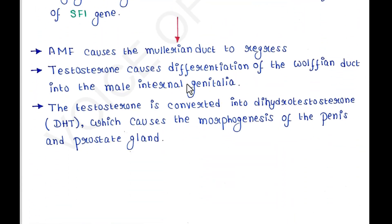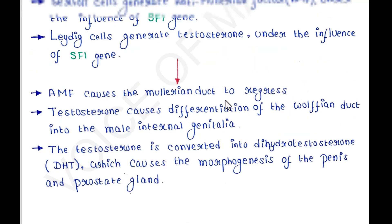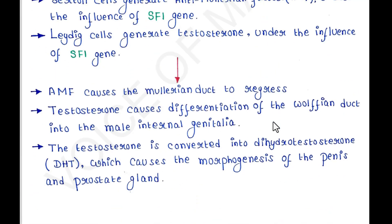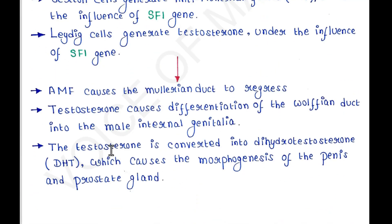Testosterone causes differentiation of the Wolffian duct into the male internal genitalia. The testosterone is converted into dihydrotestosterone (DHT), which causes the morphogenesis of the penis and prostate gland.